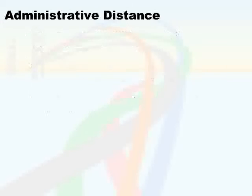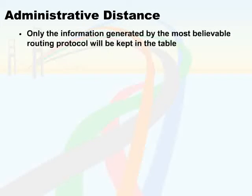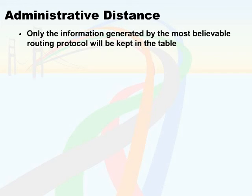What you see in a route table is, if you are running multiple routing protocols, only the information generated by the most believable routing protocol — that's all that will be kept in the table. So if I happen to be running a combination in my network of EIGRP and RIP, and I learn about the same destination from both protocols, it's default logic that the local router will only keep the EIGRP information and will discard the RIP information.